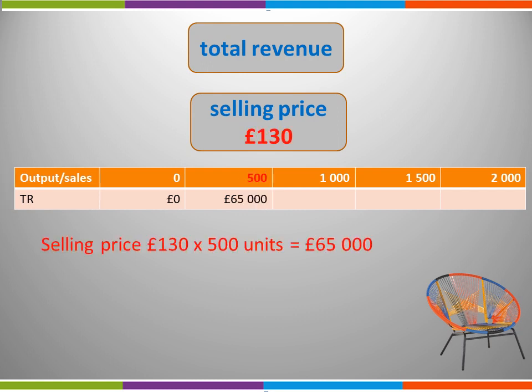If a business has sales of 500 units — or in this case 500 chairs — it has total revenue of £65,000. How did we calculate that? We took the selling price of £130 and multiplied it by the number of units sold, 500 chairs, to get £65,000.